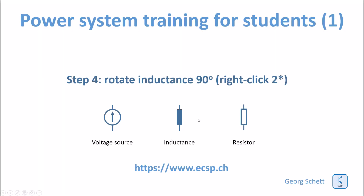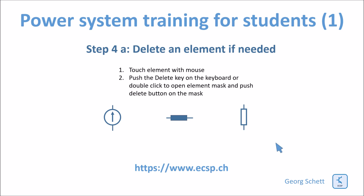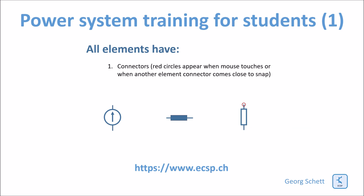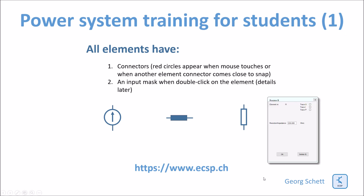Often we want to rotate one of the elements, for example by 90 degrees. You can do that by right-clicking on the mouse. To delete an element, you touch the element with the mouse until it is highlighted, then you push the Delete button on the keyboard. All elements have connectors. The connectors appear as a red circle when the mouse touches it. All elements also have an input mask — you double-click on the element and this mask appears where you can enter the data, such as the resistance value, and also select which traces you want to see on the graph.